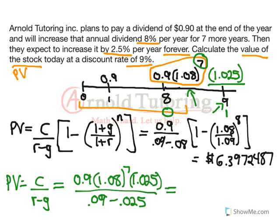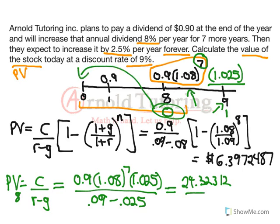The growing perpetuity formula is pretty simple to calculate. The starting cash flow is 0.9 times 1.08 to the 7 times 1.025 — that is the value of the cash flow at time 9, which is our new time 1. This formula gives us the present value at time 8, so it only brings it back to that new time 0. That gives us $24.32312. We don't want it at time 8 — we need to bring it back to time 0. To discount something 8 years, we divide by 1.09 to the power of 8, and that equals $12.20695.